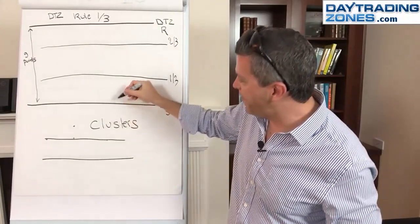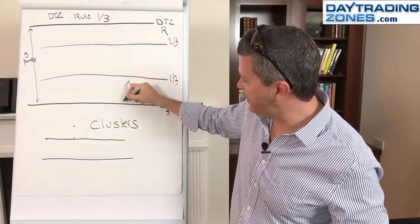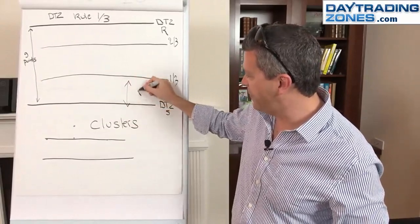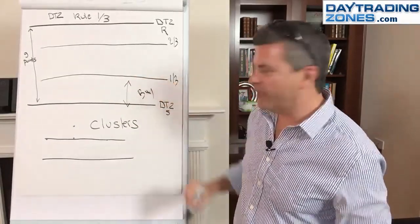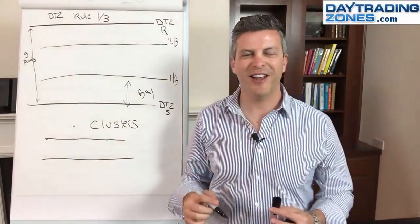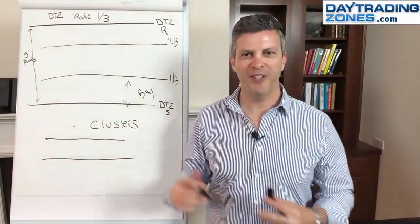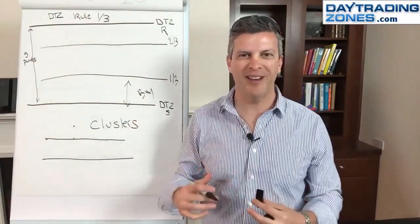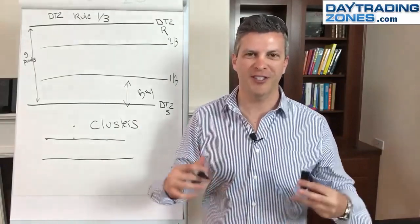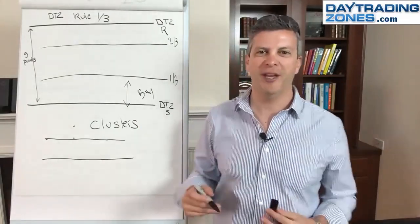If I buy in the first third, right, from support, and I buy around here, guess what? Statistically, I have two thirds. So it's the reverse in probability. I have two thirds of a chance or 66% chance of making money.